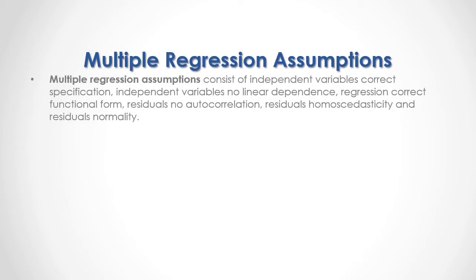Multiple regression assumptions consist of: independent variables correct specification, independent variables no linear dependence, regression correct functional form, residuals no autocorrelation, residuals homoscedasticity, and residuals normality.